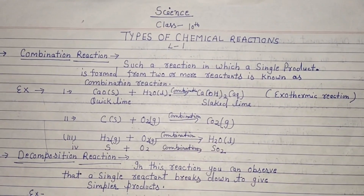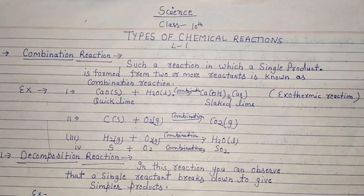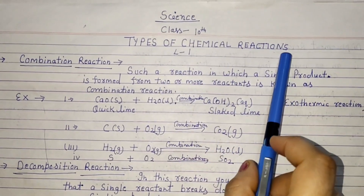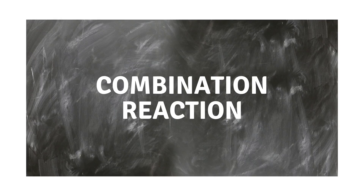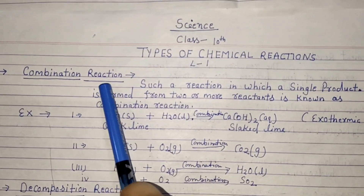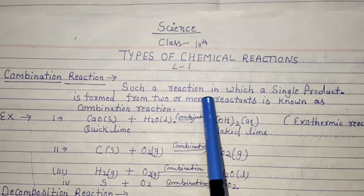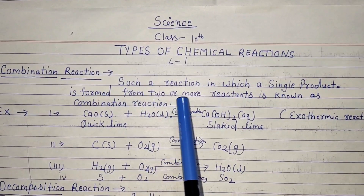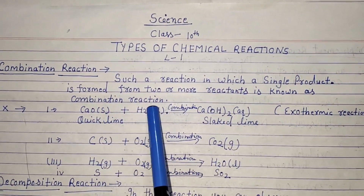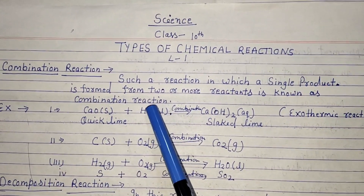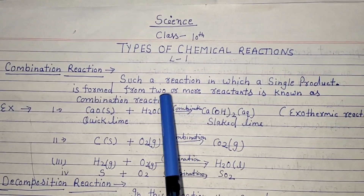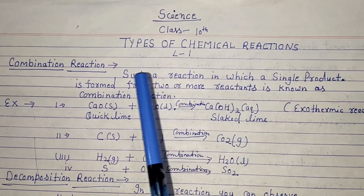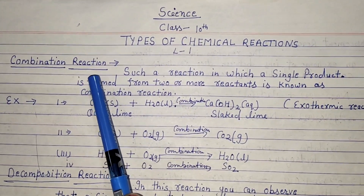Dear students, today we are going to start Class 10 Chemistry. Our topic is types of chemical reactions. The first topic is combination reaction. A combination reaction is defined as a reaction in which a single product is formed from two or more reactants — two reactants combine to make a single product.